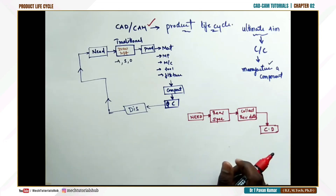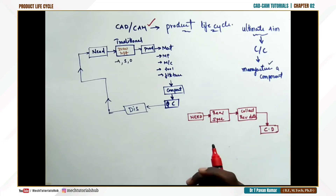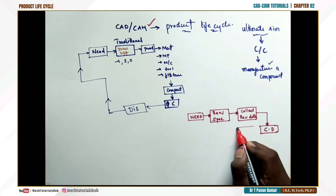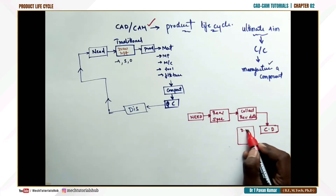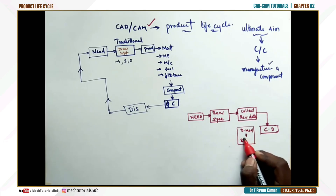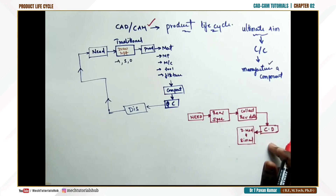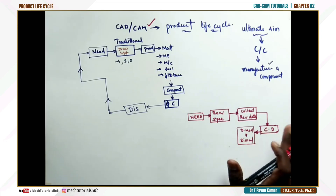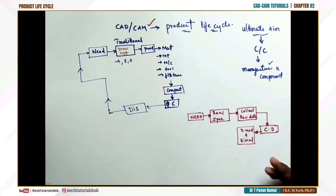The next level is design modeling and simulation. Once 2D sketches are done, we transform them into a 3D model, then simulate to verify whether dimensions are properly assigned and whether the component will work under the required conditions.